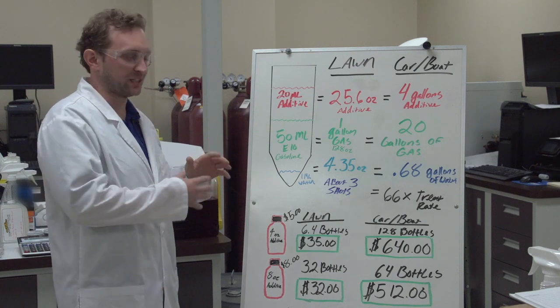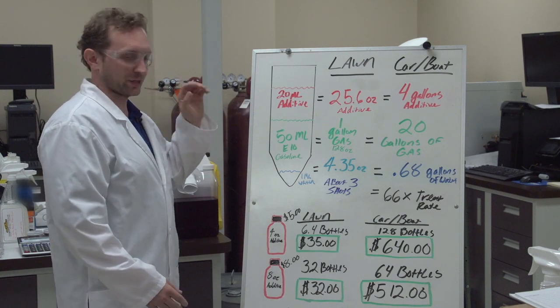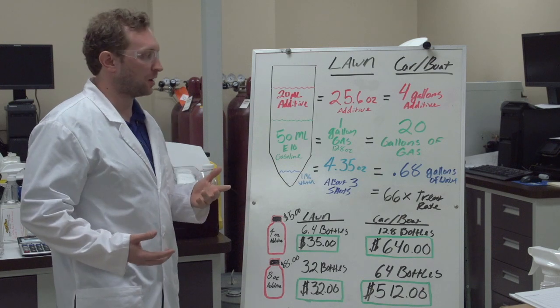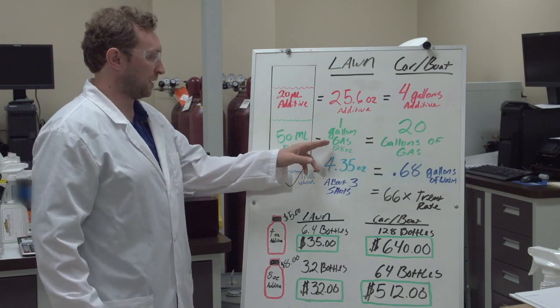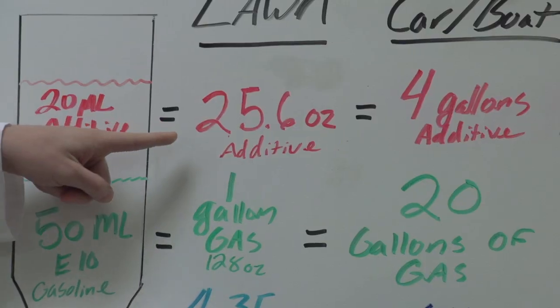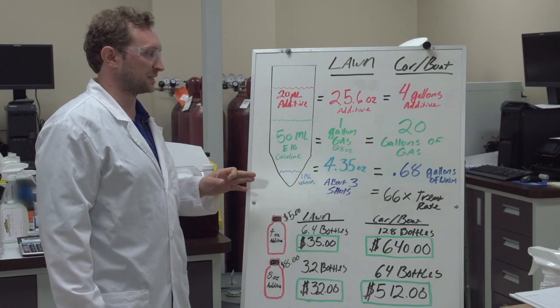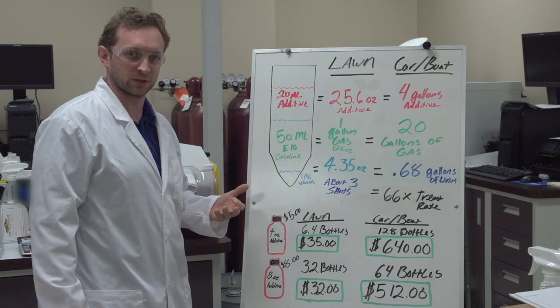This is misleading because the ratios are all off. If you were to extrapolate this out to a real world scenario, you're looking at if you have one gallon of gas, you're putting in about 25 and a half ounces. This equates to a lawnmower situation.